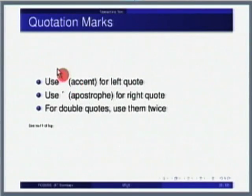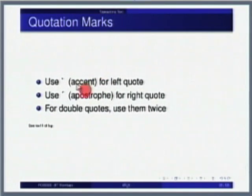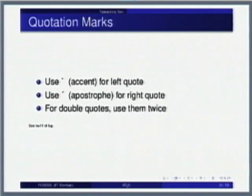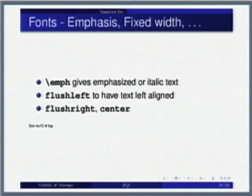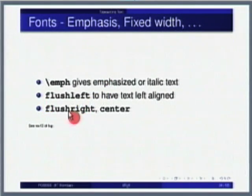We were here before we stopped: the open quote or left quote for opening, and the close quote which actually looks vertical in the text file is used for closing and also for apostrophe. For double quotes, just use them twice — they will come together close by. Slash em for emphasis — this we have started seeing. We will quickly see flush left, flush right, and center environments.